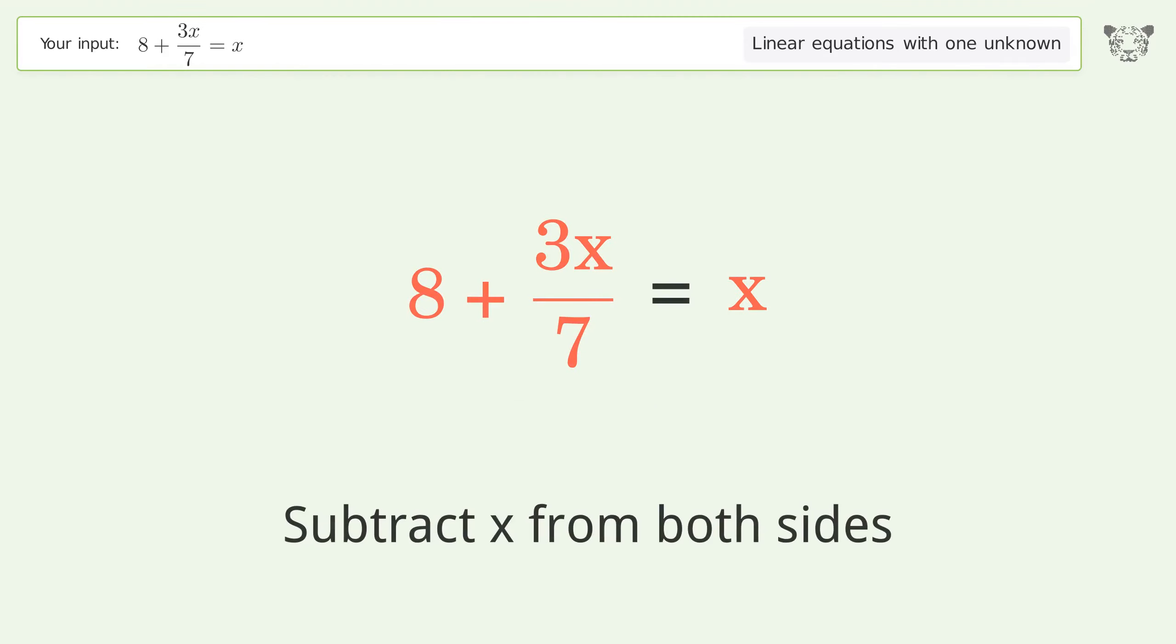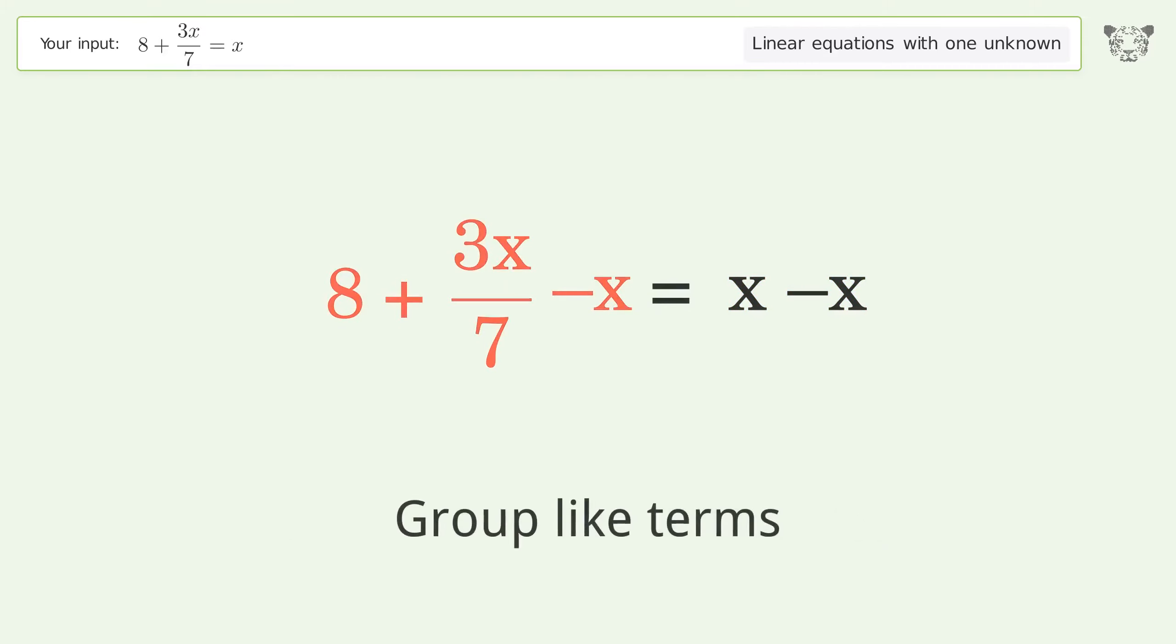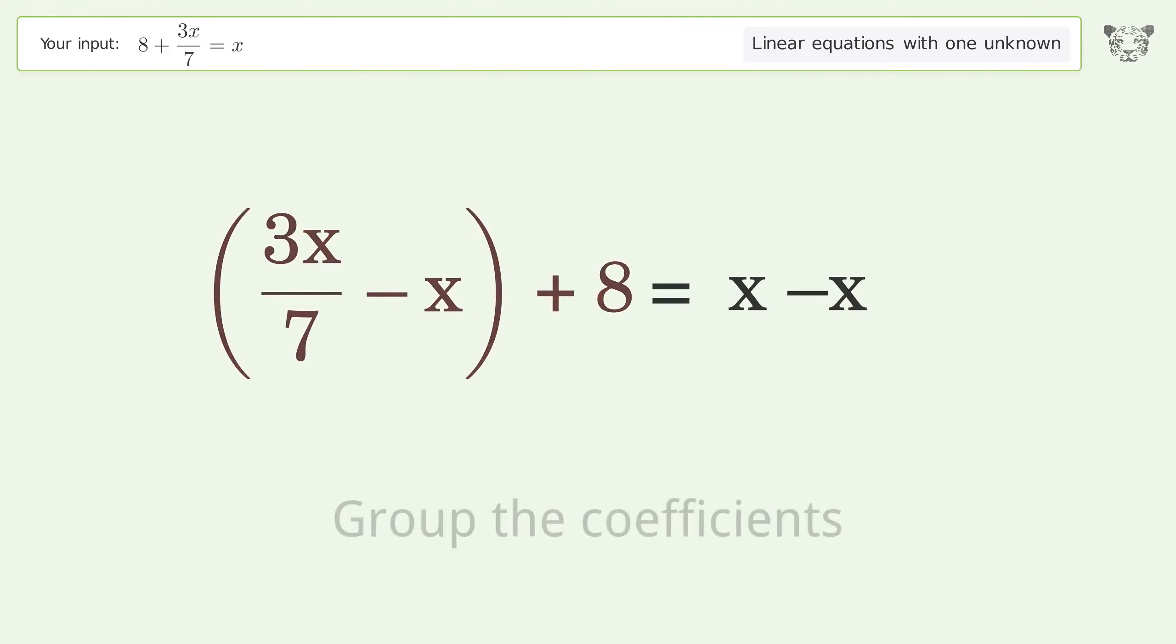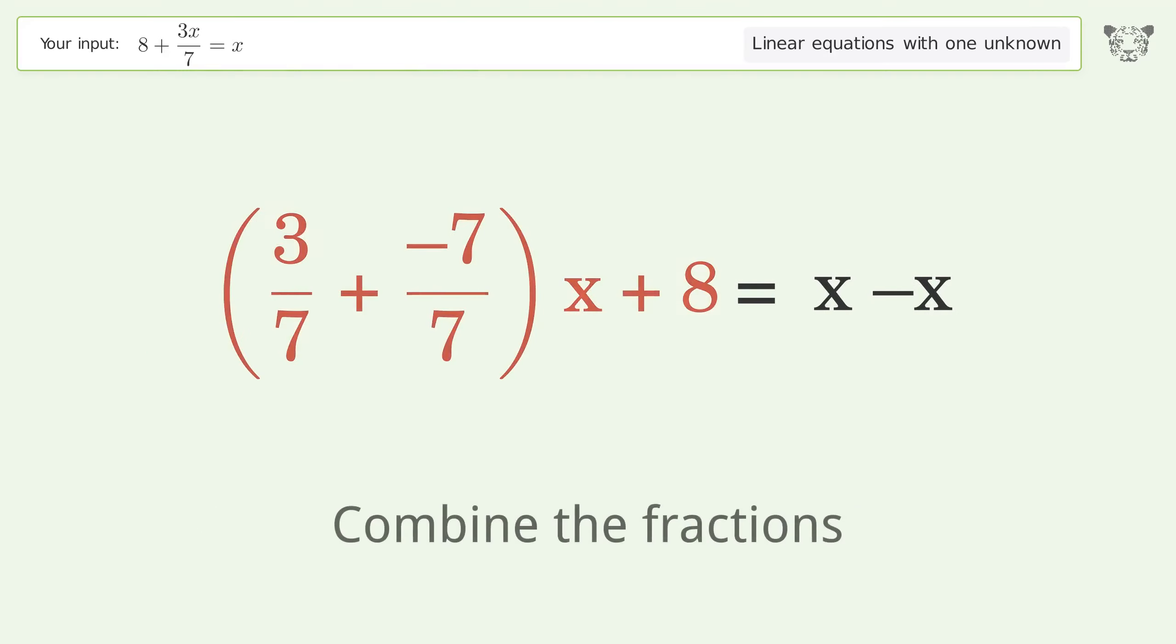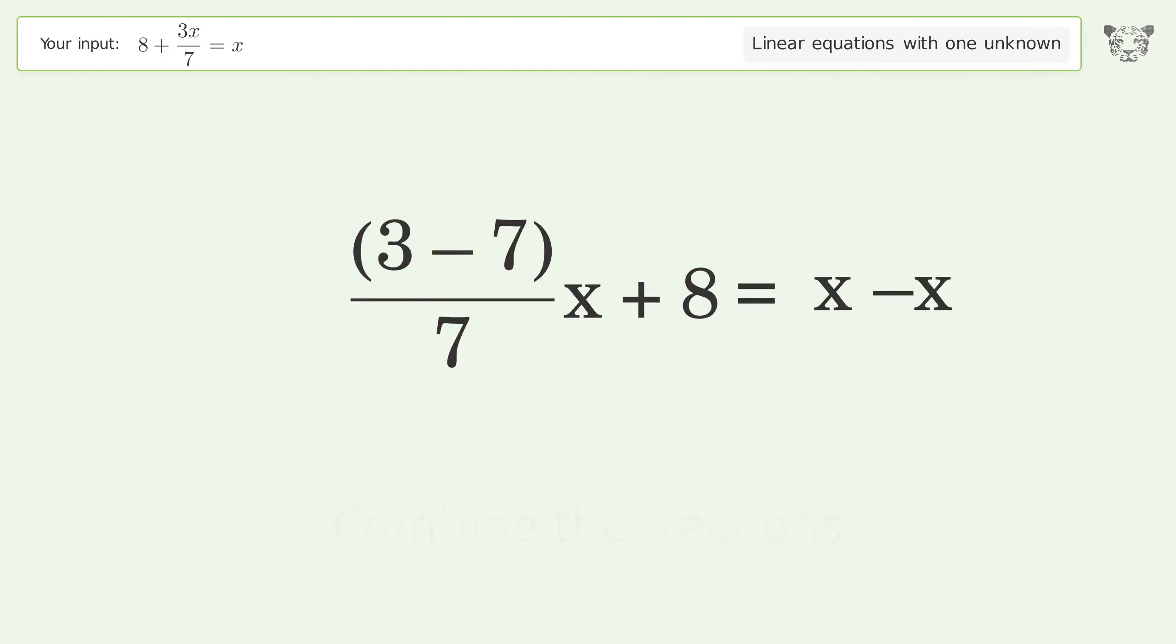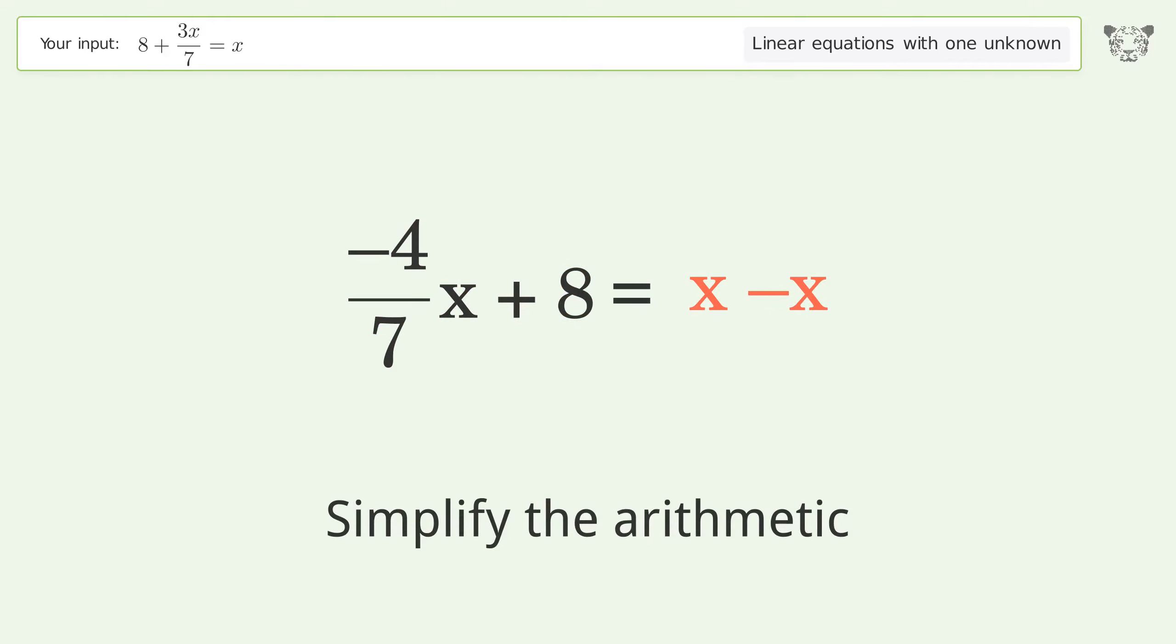Subtract x from both sides. Group like terms. Group the coefficients and convert the integer into a fraction. Combine the fractions and combine the numerators. Simplify the arithmetic.